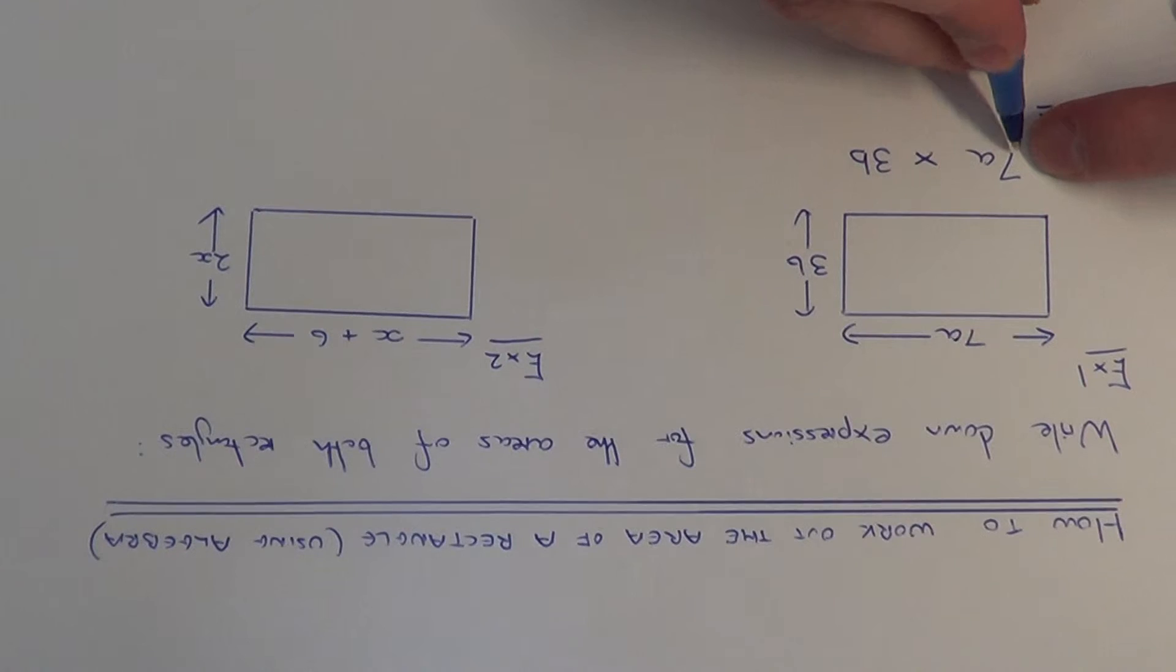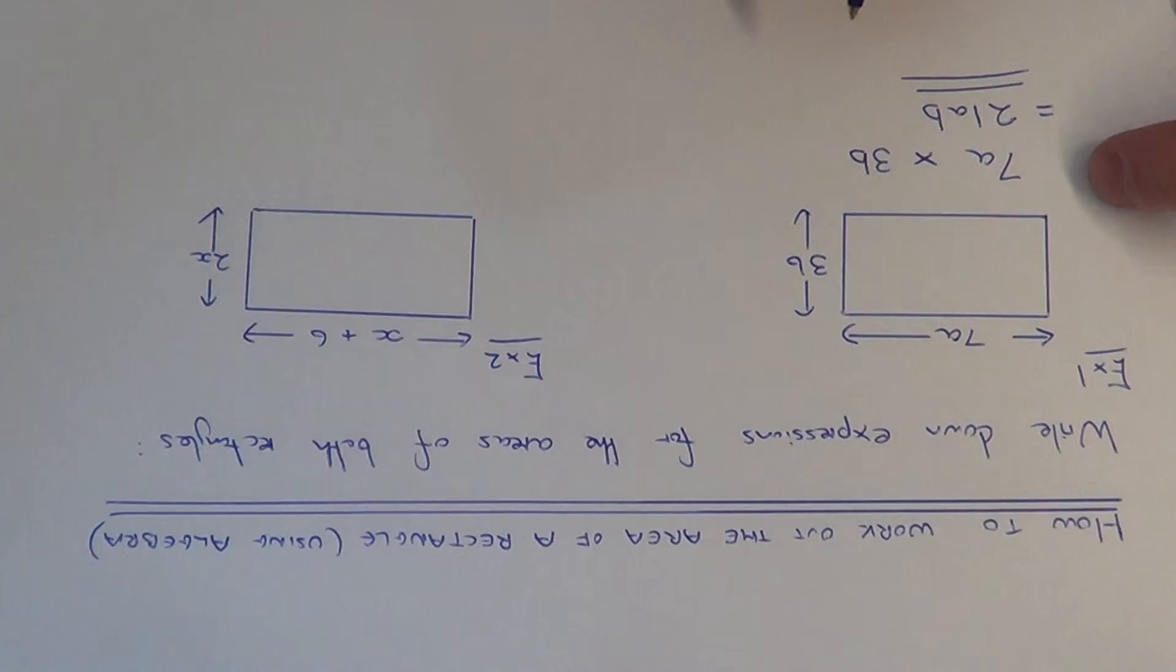If we multiply the numbers, 7 times 3 is 21, and we just put the letters beside the 21. So our final answer is 21ab.